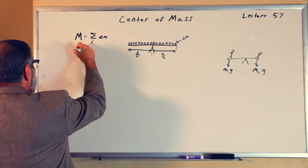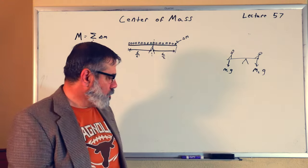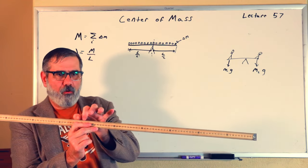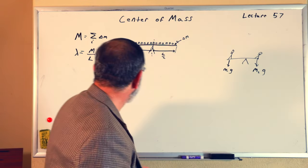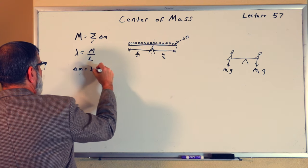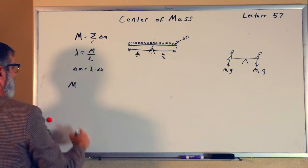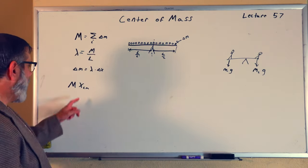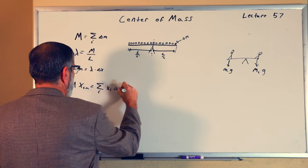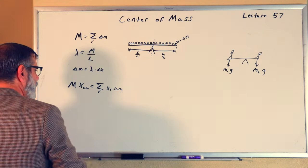I can define a density, which is the mass per length — I take the mass and divide it by the length of the ruler. If we assume the composition is uniform, such that the little delta M in this part of the ruler is the same as a delta M over in another part, then the density lambda equals M over L, and delta M equals lambda times some little delta X, where delta X is some displacement along the length of the ruler. We define M times X_CM (center of mass) as equal to the sum of X_i times delta M_i.